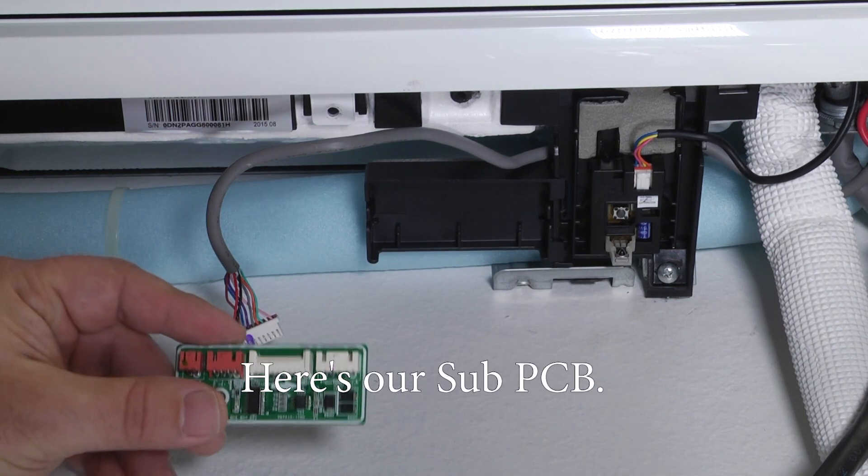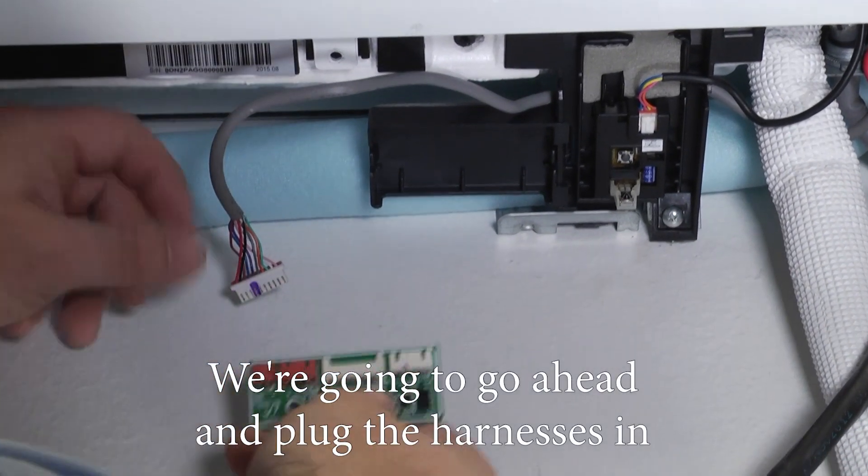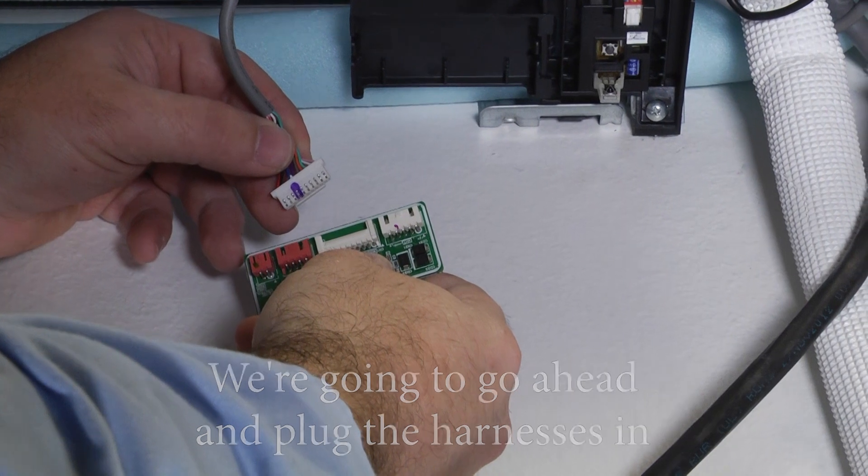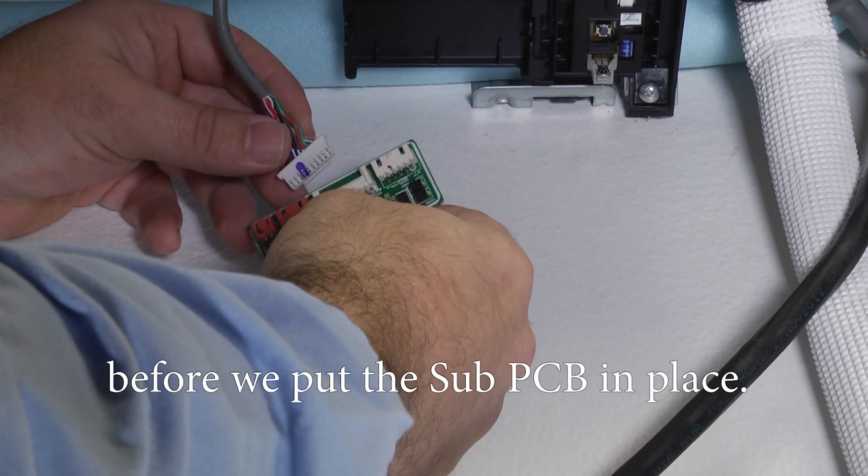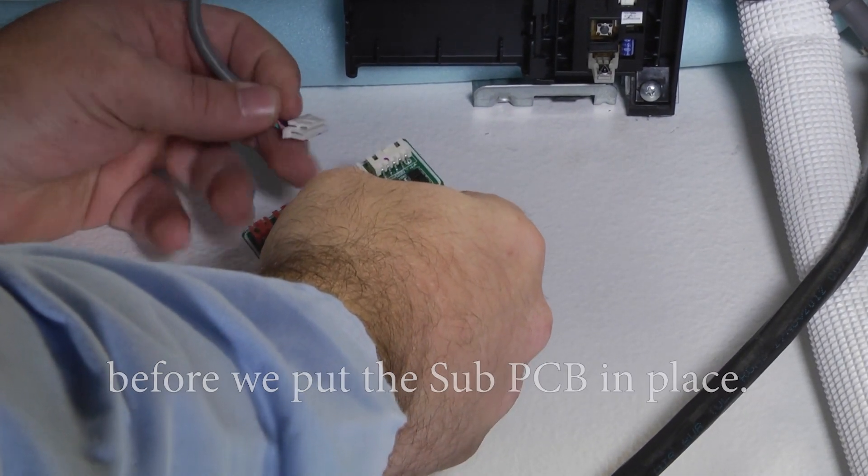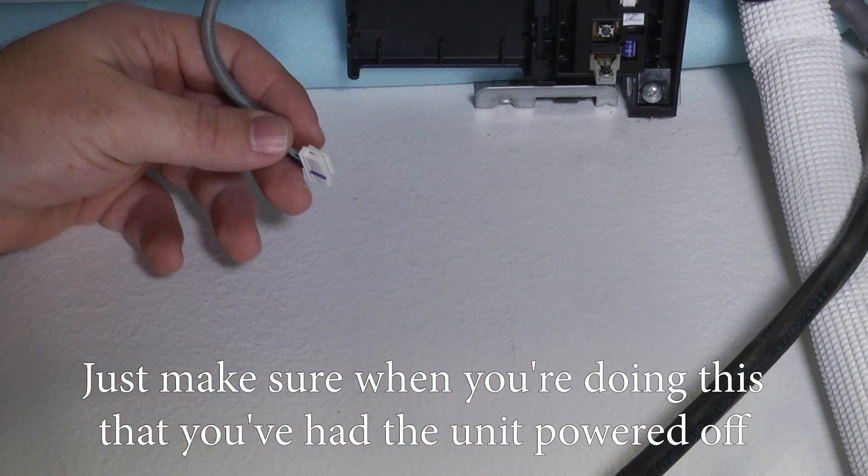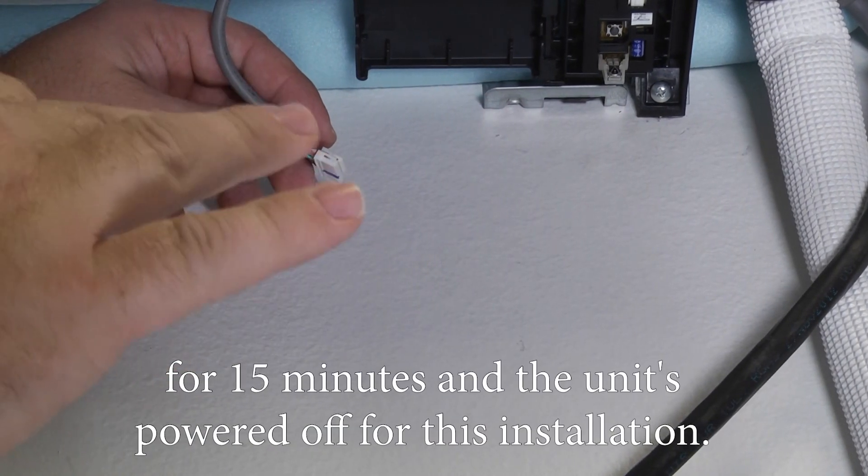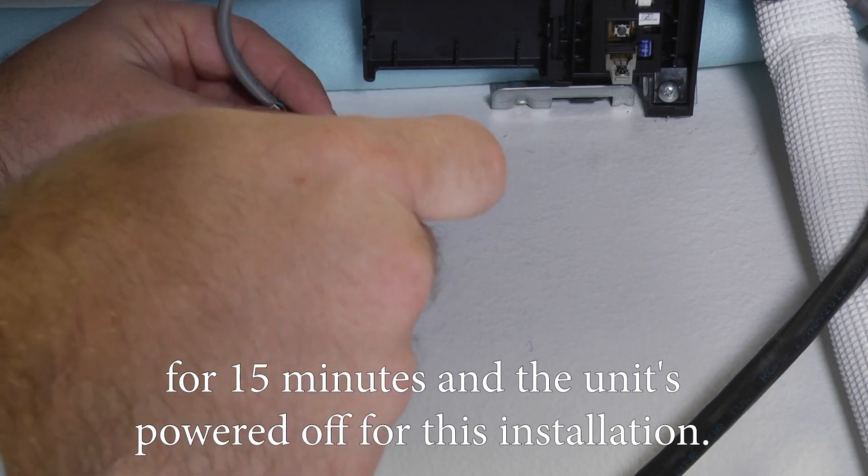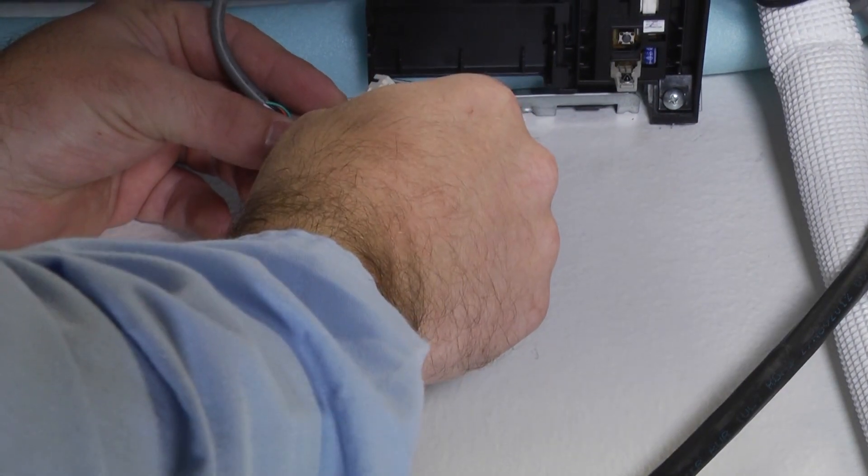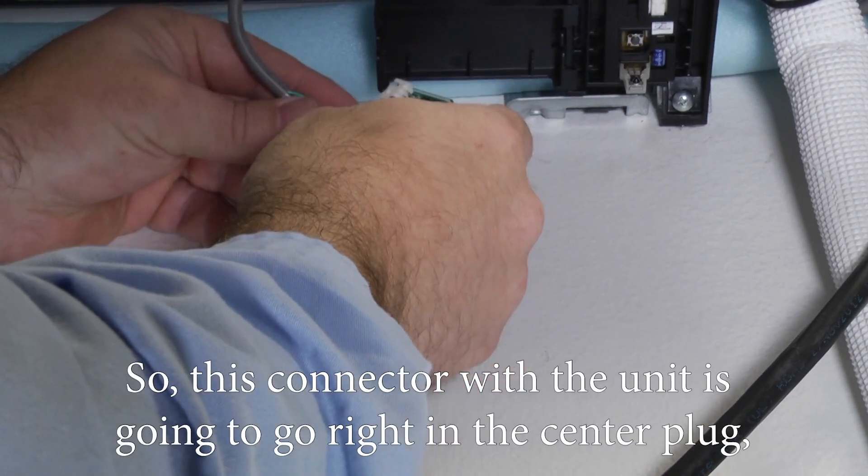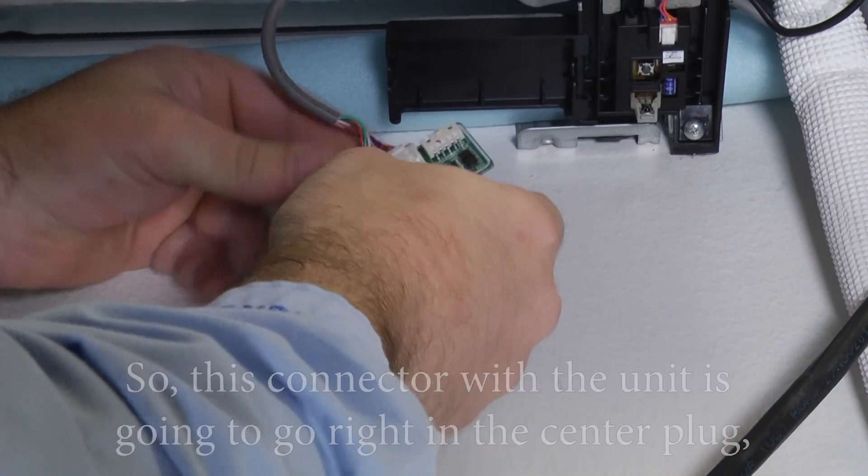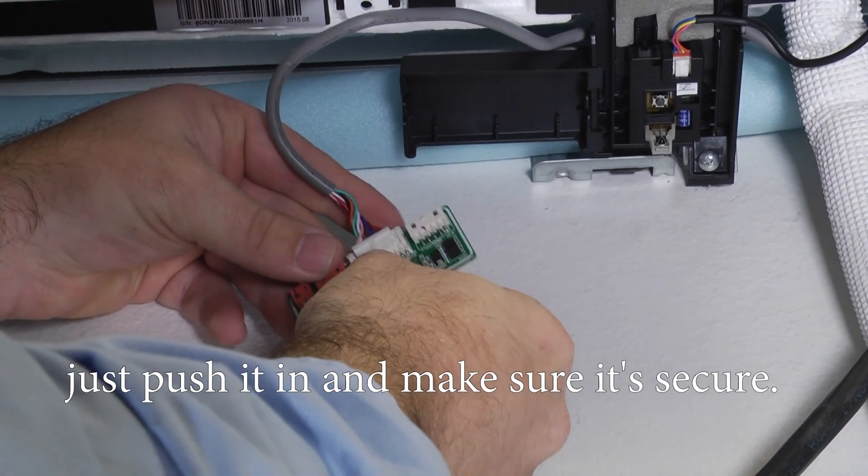Okay, so here's our sub PCB. We're going to go ahead and plug the harnesses in before we put the sub PCB in place. Just make sure when you're doing this you had the unit powered off for 15 minutes and the unit's powered off for this installation. So this connector with the unit is going to go right here in the center plug. Just push it in and make sure it's secure.